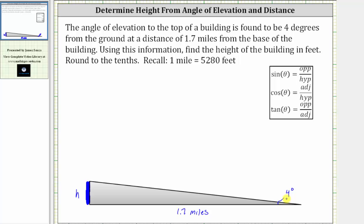Notice from the given angle, the height is the length of the opposite side and the distance from the building is the length of this leg, which is the adjacent side. And since we're using the opposite and adjacent sides from the angle of 4 degrees, we will determine the height using the tangent function value, which is the ratio of the opposite side to the adjacent side.